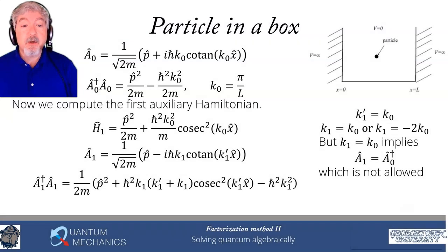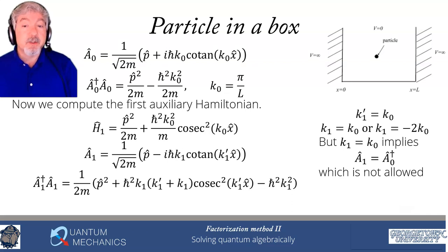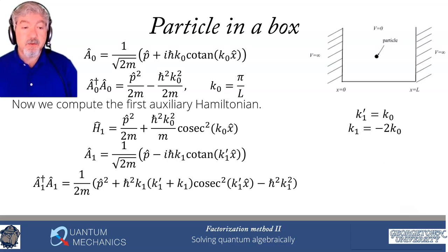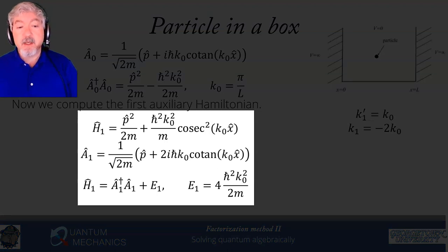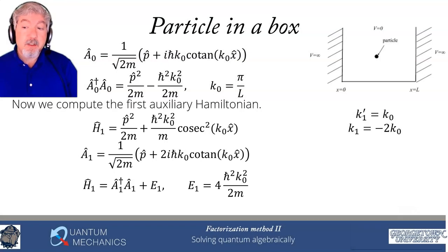One could also pick k1′ = −k0 since cosecant is even, but you'd find exactly the same ladder operators as with k1′ = +k0. So we pick k1′ = +k0 to simplify things and avoid extra minus signs. The result: A1 = p̂ + 2iℏk0 cot(k0x̂) — a 2 instead of the 1 we had for A0. Then H1 = A1†A1 + E1, with E1 = 4ℏ²k0²/(2m) since it's a k1² = (2k0)² term.